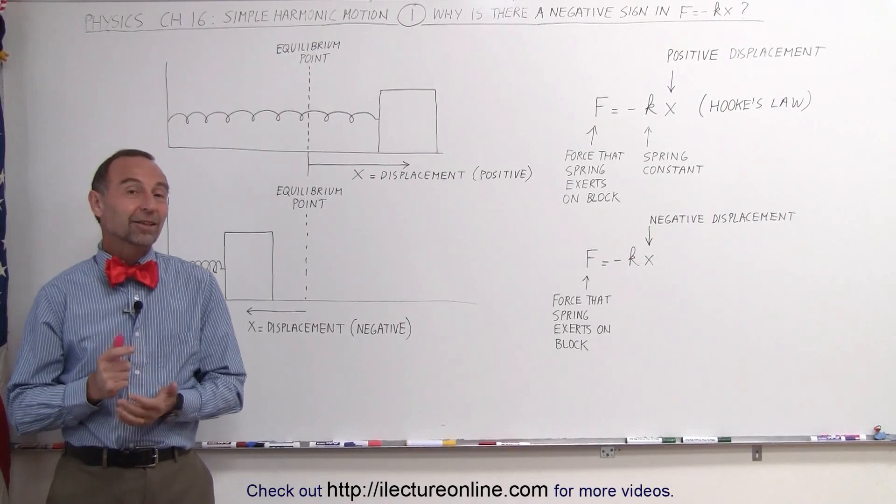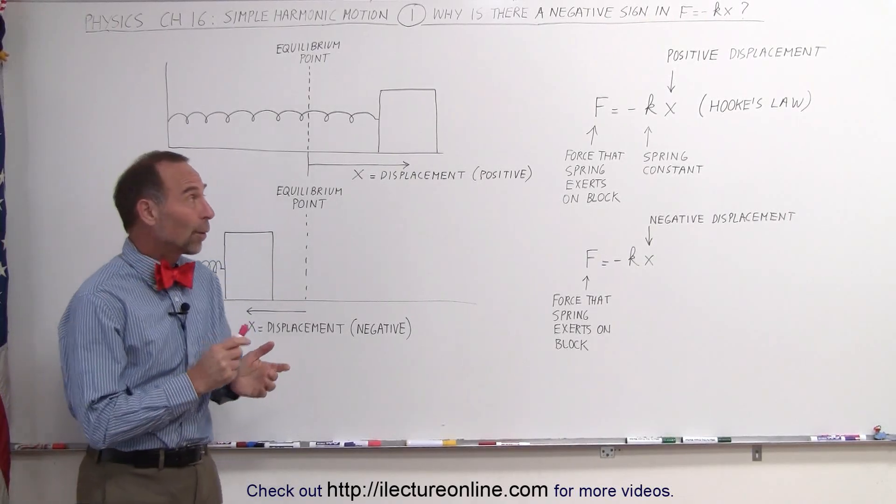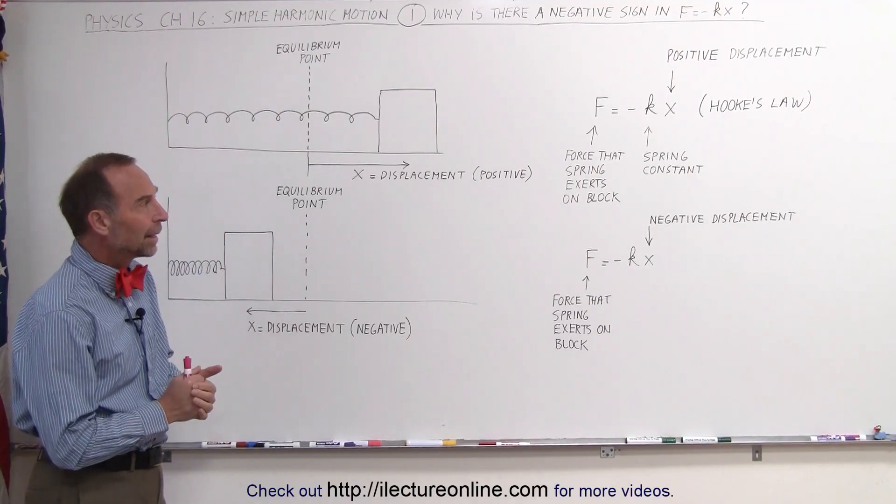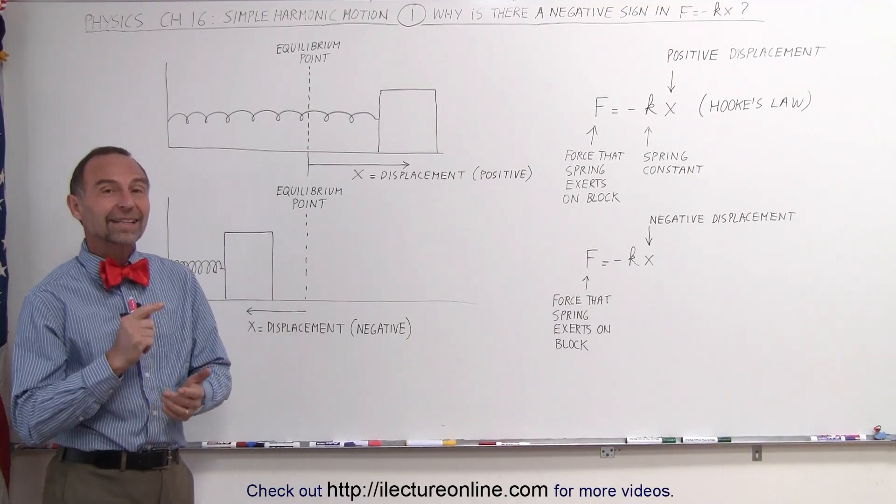Welcome to ElectronLine. In this video we're going to concentrate on the equation F equals minus kx, also known as Hooke's Law, and in particular why there's a negative sign there.